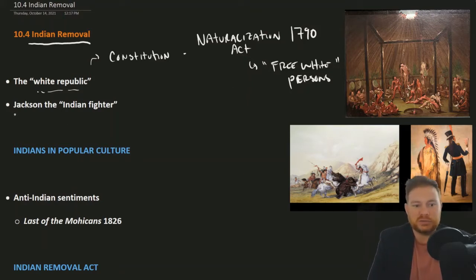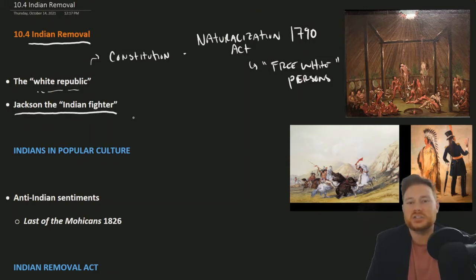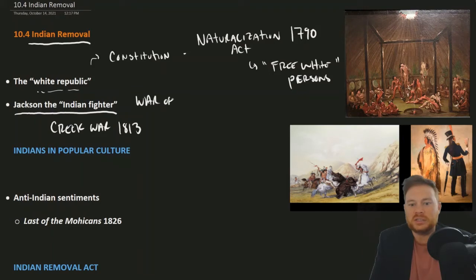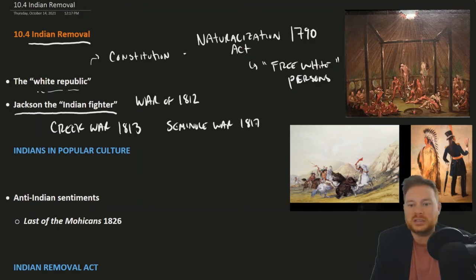Andrew Jackson himself had a history and reputation of being an Indian fighter. As a general, he had gone to war against Native Americans on a number of occasions — examples include the Creek Wars against the Creek Indians in 1813, the War of 1812 in which the British had Native American allies and he fought against people like Tecumseh, and the Seminole War fought in Florida in 1817.